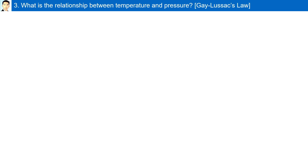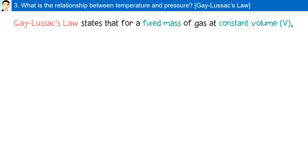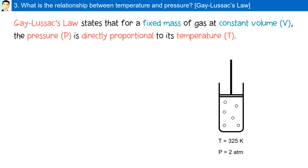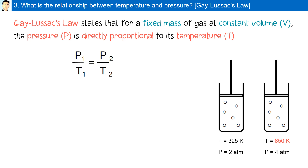What is the relationship between temperature and pressure? Gay-Lussac's law states that for a fixed mass of gas at constant volume, the pressure is directly proportional to its temperature. Here, we have the temperature at 325 Kelvin and a pressure at 2 atmospheres. If the temperature was to double to 650 Kelvin, the pressure will also double. It is a direct relationship.